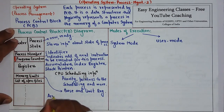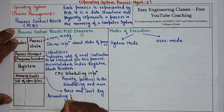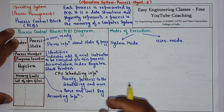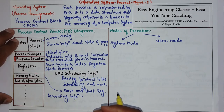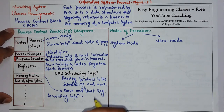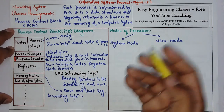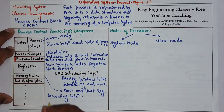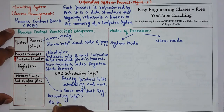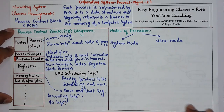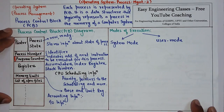There are more kinds of information present in the PCB. Some of those are accounting information, which includes the number of processes running, the number of tasks being executed, or the amount of CPU allocated to this particular process. We also have input-output information, which includes the list of input-output devices that are allocated to this process.